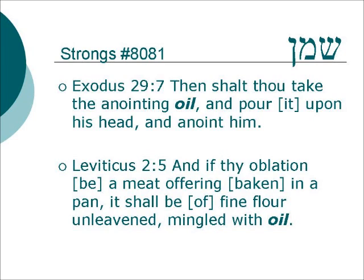Exodus 29.7: Then shalt thou take the anointing oil and pour it upon his head, and anoint him. So we see that the oil is used for anointing. Leviticus 2.5: And if thy oblation be a meat offering baked in a pan, it shall be a fine flour unleavened, mingled with oil. The oil, the shemin, is part of an offering.